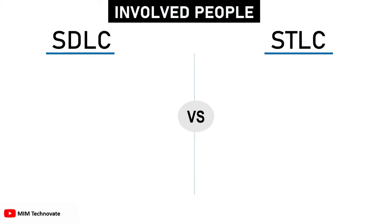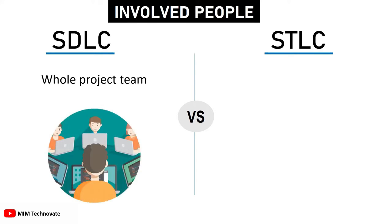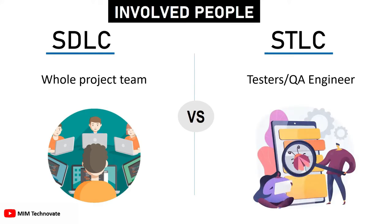Involved people: In the Software Development Life Cycle, the whole project team is involved. Whereas in the Software Testing Life Cycle, testers and quality assurance engineers are involved.